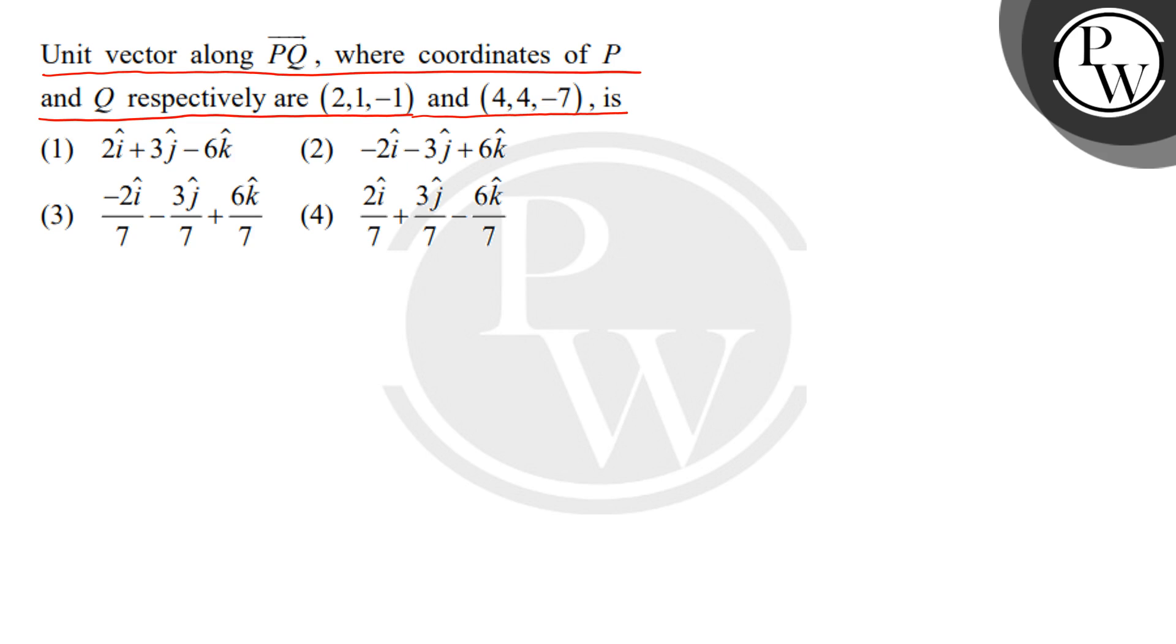Okay, so first, let's look at the unit vector along PQ. If the coordinates of P and Q are given, then the position vector OP is 2i + j - k.